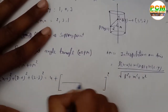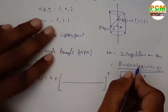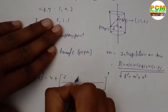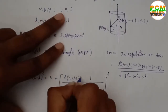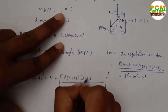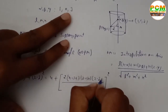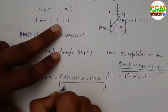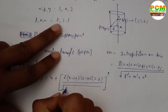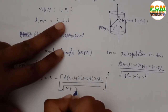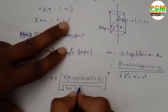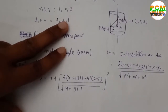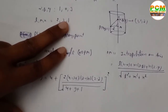Substituting the values l=2, m=3, n=1 and α=1, β=0, γ=3: OM = [2(x−1) + 3(y−0) + 1(z−3)] / √(4+9+1) = [2(x−1) + 3y + (z−3)] / √14.